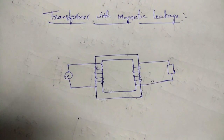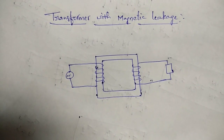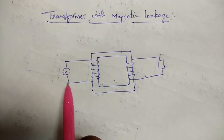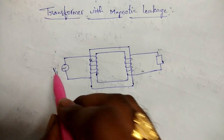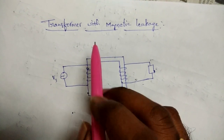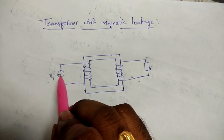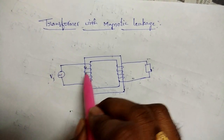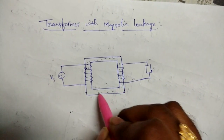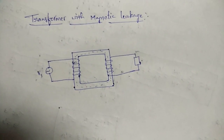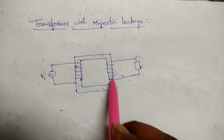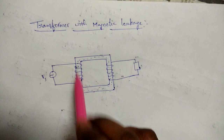We will discuss the transformer with magnetic leakage. This is a transformer with two windings — the primary is connected to the supply voltage AC supply V1 and the secondary is connected to the load. Regarding magnetic leakage: when supply is given to the primary winding, a flux is created and flows through the transformer core. Assume there is 100% flux — 95% of the flux flows through the core.